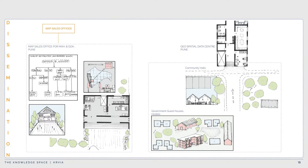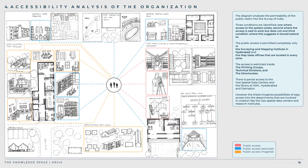The map sales office is located on Arandhi Road in Yerawada and is a very small, secluded office with minimal public presence. This diagram analyzes the permeability of the public realm into the Survey of India. Three conditions are identified: where access exists (shown in red), where access is said to exist but does not (shown in blue), and where access should be extended to the public. Access is permitted completely only at the Surveying and Mapping Institute in Hyderabad and the map sales offices. There is partial access to the Geospatial Data Centers and the library at Hyderabad and Dehradun.